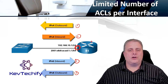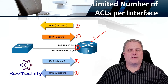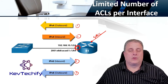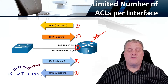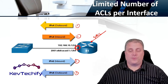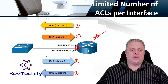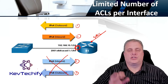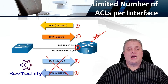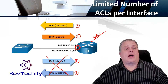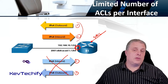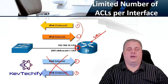If you have another interface going off in a different direction, you can have four more access control lists there. Now, four is only if you're running dual-stack. If you're only running IPv4, you can't put IPv6 ACLs on there because the commands won't be recognized. If you're only running IPv4 or only IPv6, the maximum you can have is two access control lists — one inbound, one outbound — per interface.